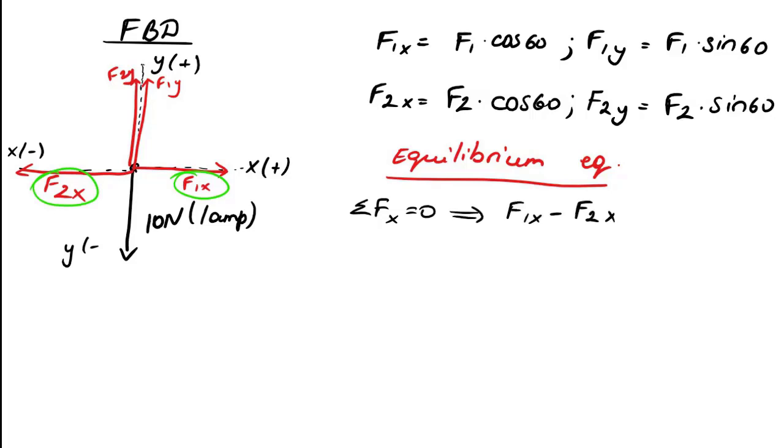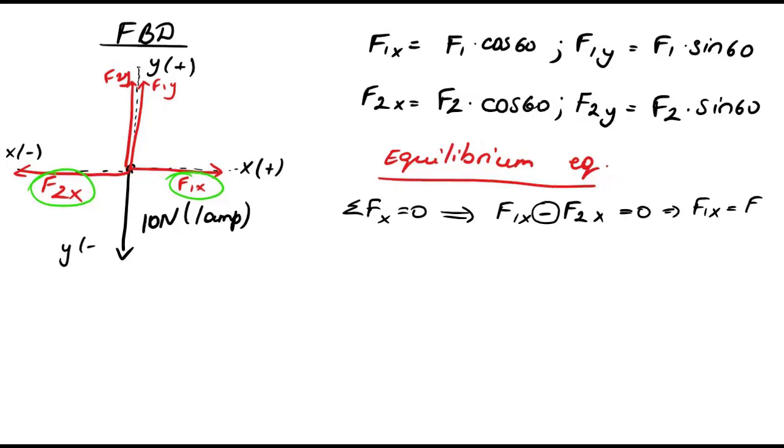Hence it will be negative. I get from this equation that F1 is equal to F2. Since we don't know F1 and F2, let's skip to the other equation. We will come back to this later.